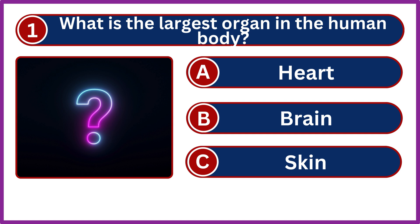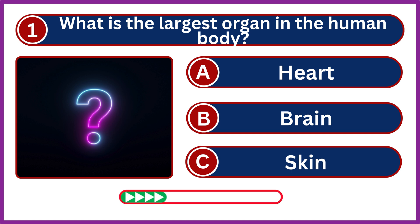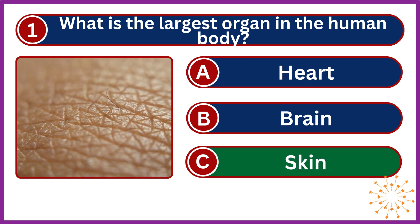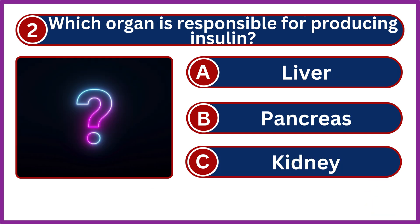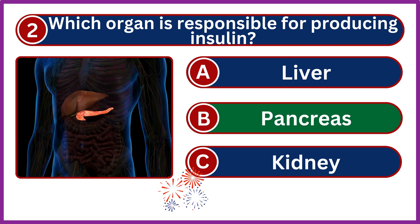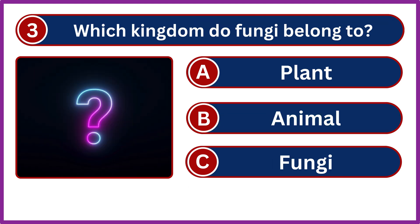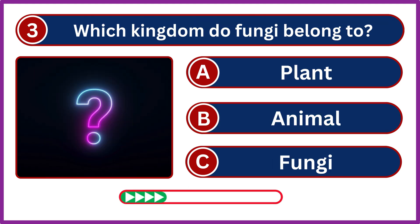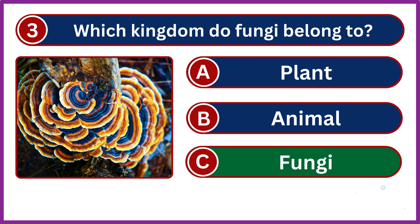What is the largest organ in the human body? Skin. Which organ is responsible for producing insulin? Pancreas. Which kingdom do fungi belong to? Fungi.